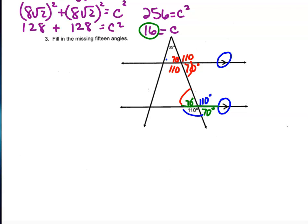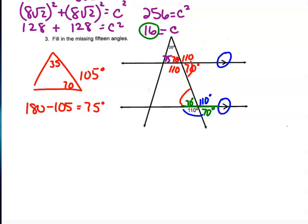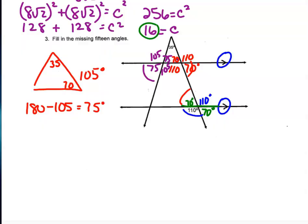Looking at the top triangle, we found one angle to be 70 degrees and the top angle was given as 35 degrees, totaling 105 degrees. Since they must add to 180, the missing angle is 75 degrees. Using vertical and supplementary angles, we get 75, 75, and 105. Working down to the last intersection, alternate interior gives 75, vertical gives 75, and supplementary or alternate interior gives 105.